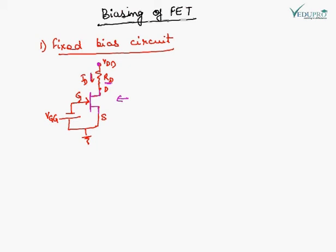The current through RD will be ID. Another voltage source, VGG, is connected to the gate. The negative of the battery is connected to the gate to reverse bias the PN junction. According to the circuit, the PN junction is reverse biased, so the current in the gate is going to be zero.